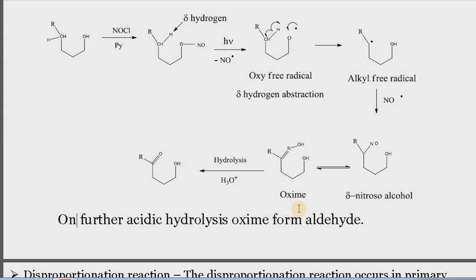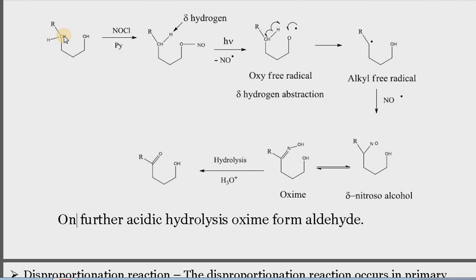If you are given an alkyl nitrite as reactant and asked to treat it under irradiation conditions, you just put the NO at the delta position in place of this hydrogen and shift this hydrogen to the OH. This CH₂ unit gets converted into a C=O unit after hydrolysis of the oxime. The less reactive delta position — the CH₂ unit — gets converted into the more reactive carbonyl, amino, or cyano group during the Barton reaction.